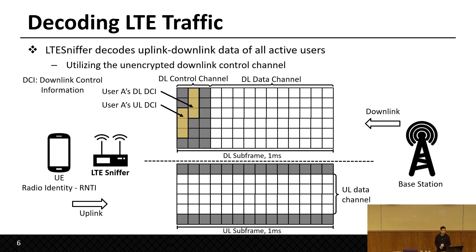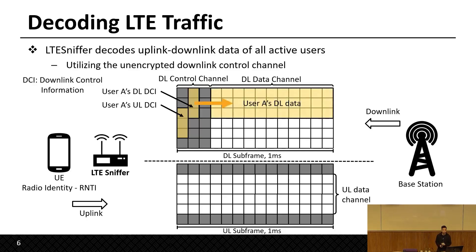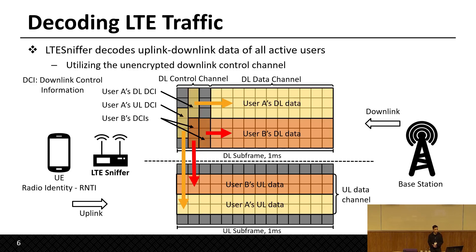LTE Sniffer utilizes the downlink control channel, which is not encrypted. This channel contains DCI, or downlink control information, which indicates to the UE how and where to decode downlink data, or how and where to send uplink data. Because there are multiple DCIs for multiple users, the base station assigns an RNTI — a radio identity — for each UE. By decoding DCIs for users A and B, LTE Sniffer can further decode downlink and uplink data for those users.